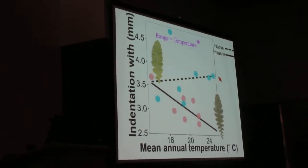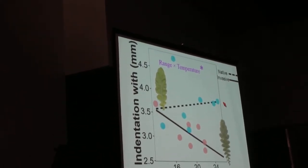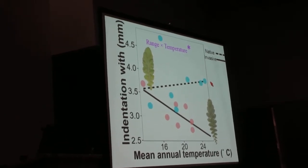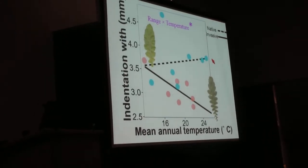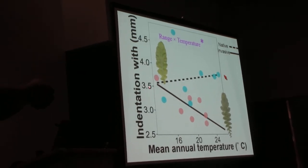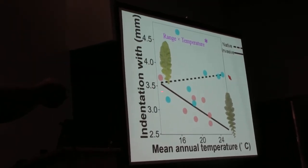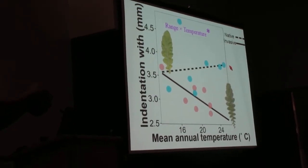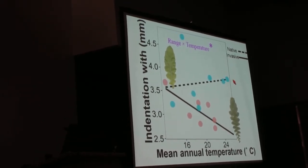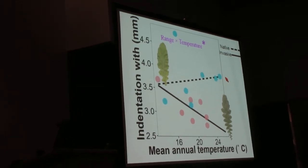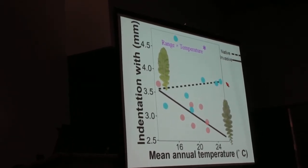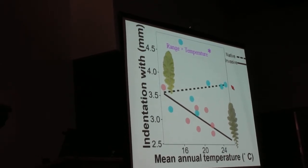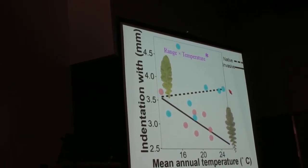I also found significant interactions between range and temperature for indentation width. For the native range, I saw this increasing cline. With increasing temperature, the width of those leaf serrations increases, but I see the opposite trend in the invasive range, in that these indentations get smaller and smaller with increasing temperature.